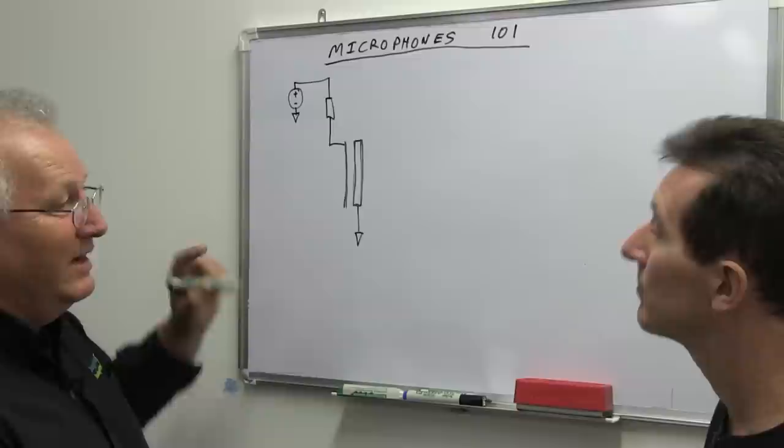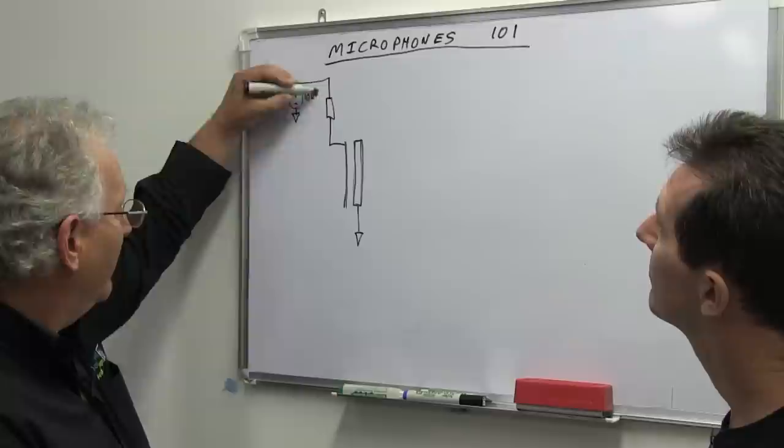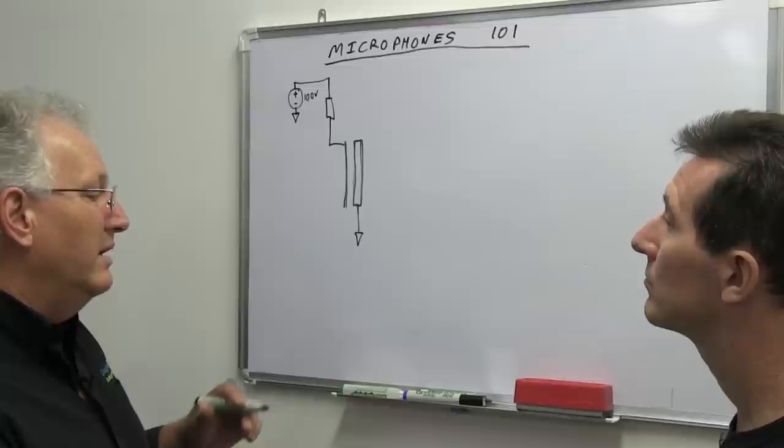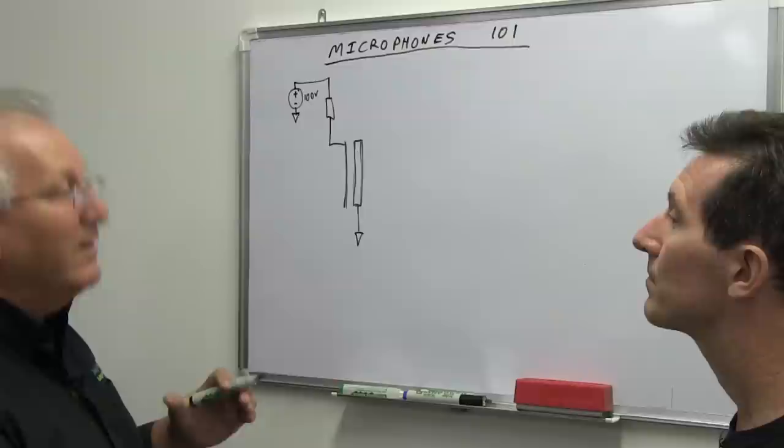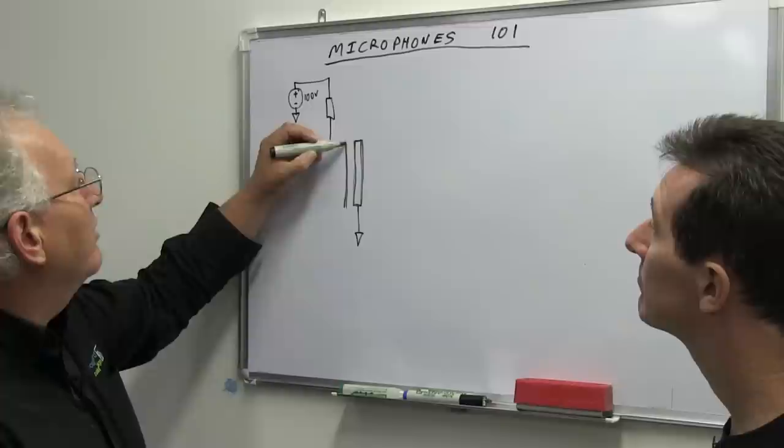And we need a high resistance here for reasons to be explained in a second. What we've done here is, let's say that's about 100 volts. In a measurement microphone, such as a Brüel & Kjær microphone, which is externally polarized, they would typically use a 200 volt polarizing voltage.